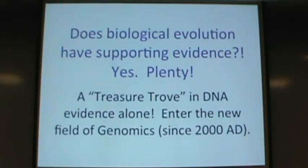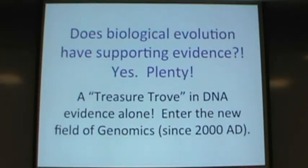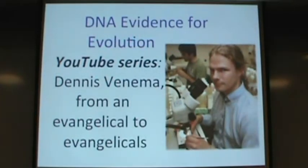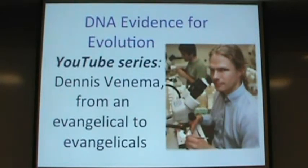I'm going to focus on DNA evidence because I think it's the most conclusive and it's extremely rich and new. Since the year 2000, the human genome has been sequenced, and since then other animals too. This field of genomics allows you to compare DNA across animals and see changes just as you'd expect from common descent. Either the descent happened, or there's some creator trying to deceive you by making it look like it happened when it really didn't. On YouTube, an evangelical Christian scientist has a long video presenting all the evidence for evolution, trying to teach his evangelical brethren about it.